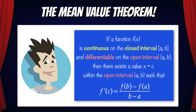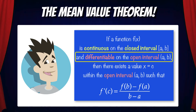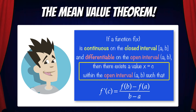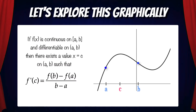The mean value theorem states that if a function f is continuous on the closed interval a,b and differentiable on the open interval a,b, then there exists a value x equals c within the open interval a,b such that f prime of c equals f(b) minus f(a) over b minus a. Let's take a look at this graphically to explore what this means.